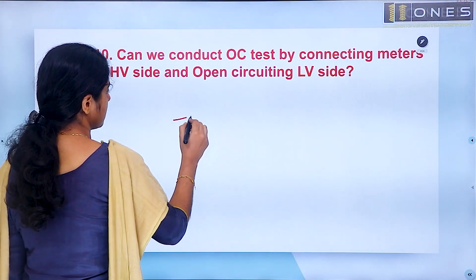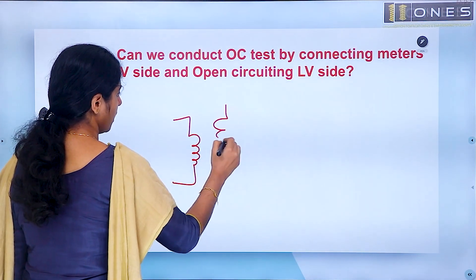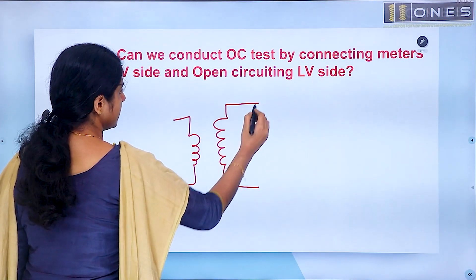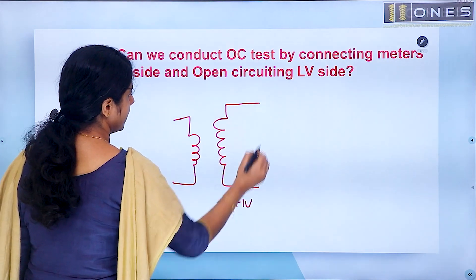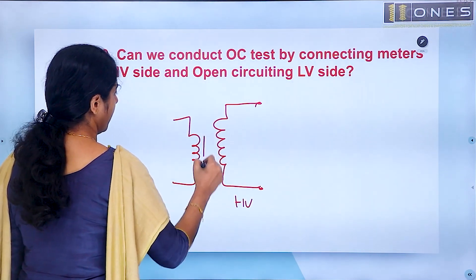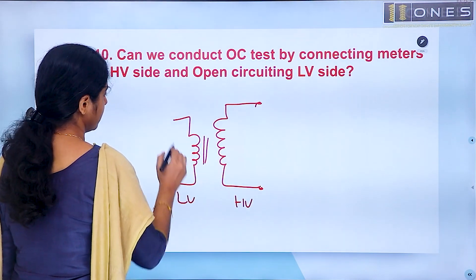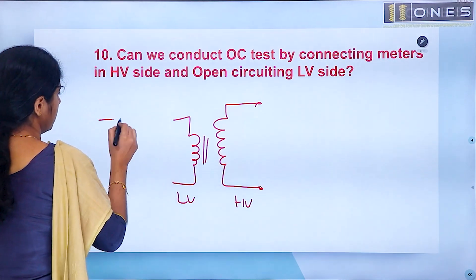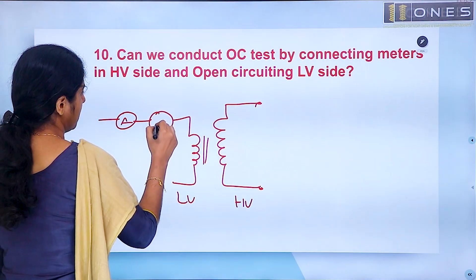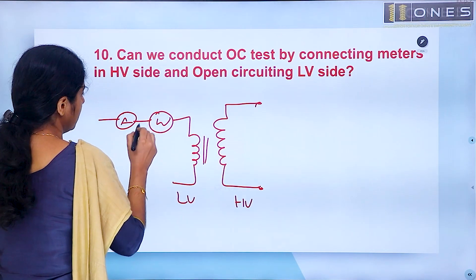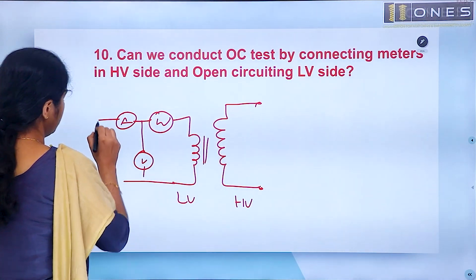In open circuit testing, what do we do? The high voltage side is open, and the LV side is connected to meters — an ammeter, a watt meter, and a voltmeter are connected.